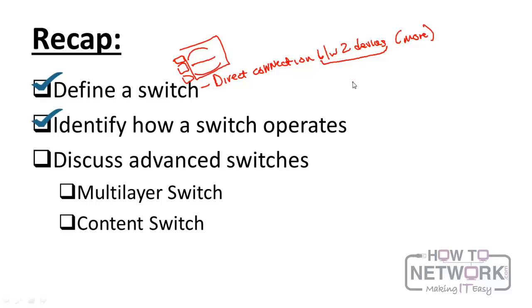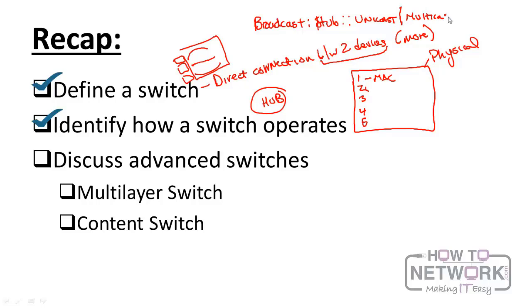Now how it does this is it creates a table defining which ports are connected to which MAC addresses. Again a MAC address is the physical address that's built into a device when it's made. This is different from a hub which just broadcasts everything. So if we were to create an analogy, we could say broadcast, to mean all the data going out to every other device, is to a hub what unicast or multicast is to a switch.